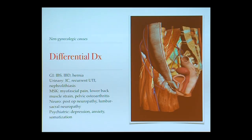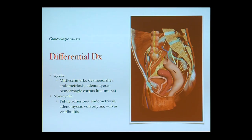There are many causes of pelvic pain — recall all the muscles, ligaments, and organs in the pelvis. When thinking about GYN causes, cyclic pain includes mittelschmerz (pain with ovulation), dysmenorrhea (pain during periods), endometriosis (initially pain during periods that can become chronic), adenomyosis (pain associated with periods that can progress), and hemorrhagic corpus luteum cysts. Non-cyclic causes include pelvic adhesions, endometriosis progression, adenomyosis, vulvodynia (pain on the outside of the vulva), and vulvar vestibulitis (pain near the entry to the vagina).